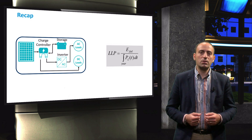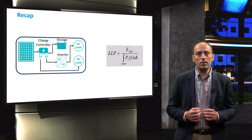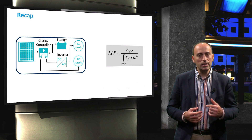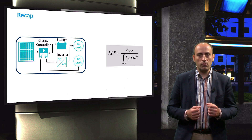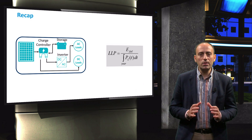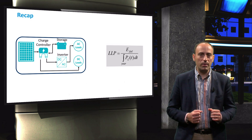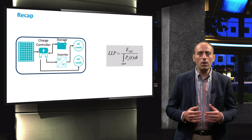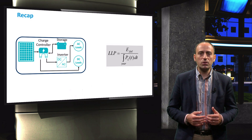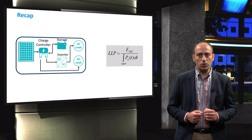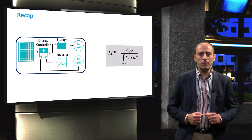To conclude, in this video we discussed the loss of load probability as a performance indicator of a standalone PV system. You will see in a later video that the design evaluation of a standalone PV system is based on achieving appropriate LLP values for a particular application. The design will only be approved if the LLP levels of a PV system design are sufficient. In the next video we shall begin modeling the standalone PV system.